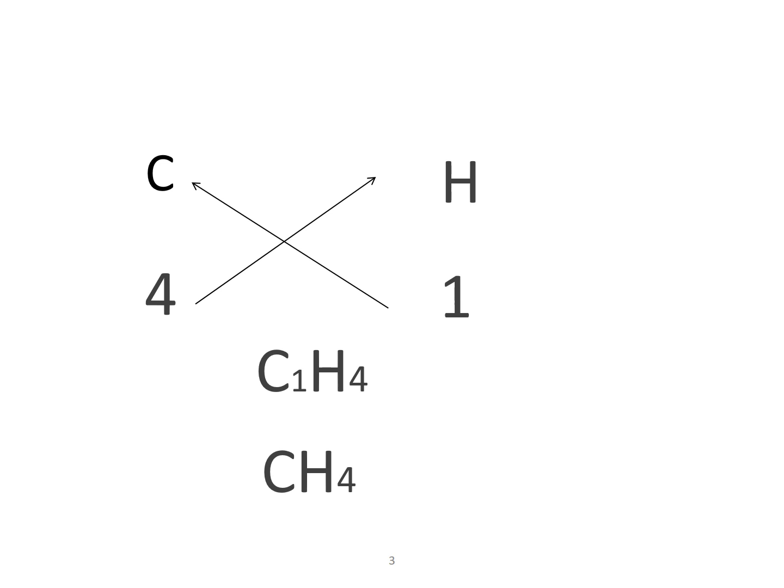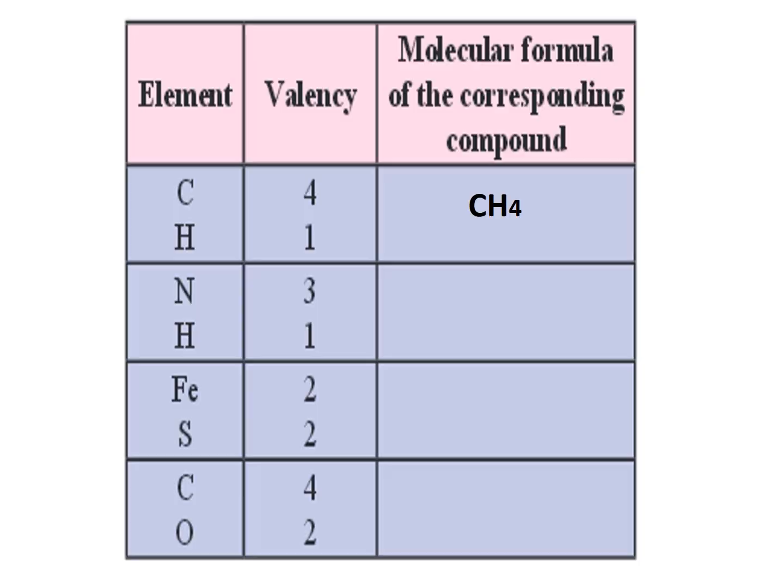Now, because you have the cross multiplication happening, whenever you have a formula written, you will always have the valency of the second element coming to the first one and the valency of the first element going to the second one. That is why from the formula you will understand that the valency of carbon was 4 because hydrogen has that number, and valency of hydrogen is 1 because carbon has that number. We will write this in the table: the molecular formula of the compound is CH4.